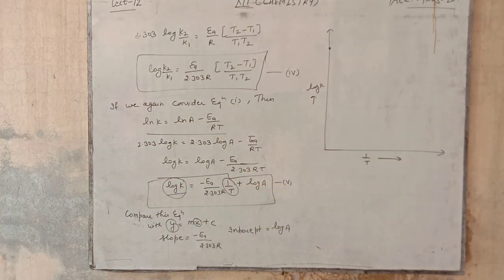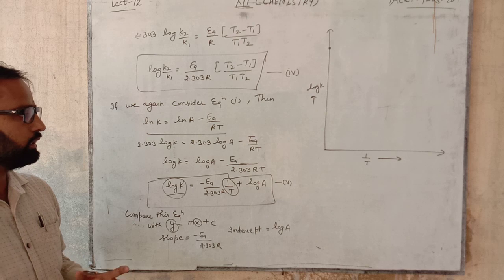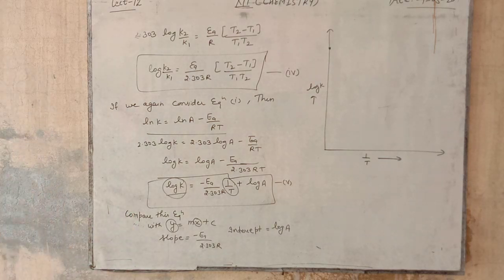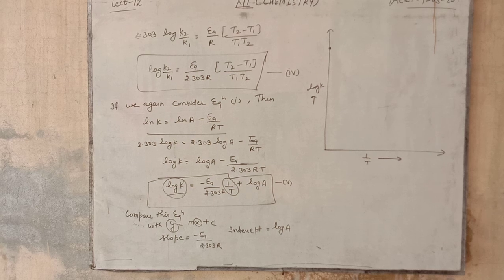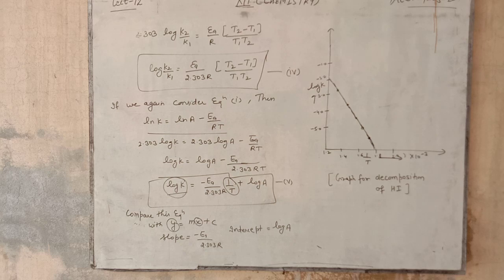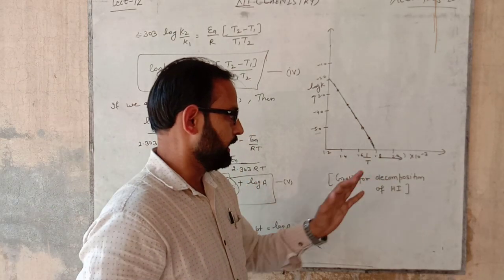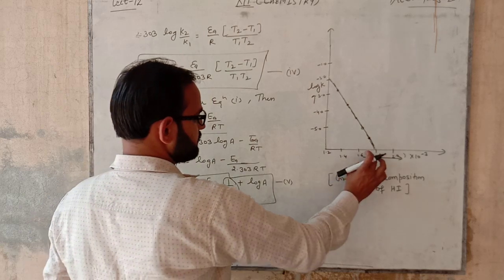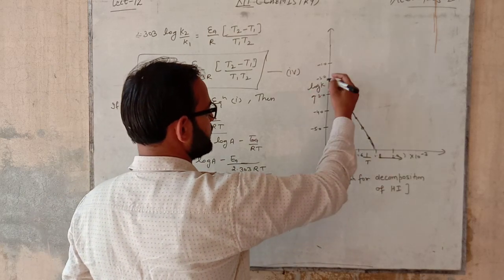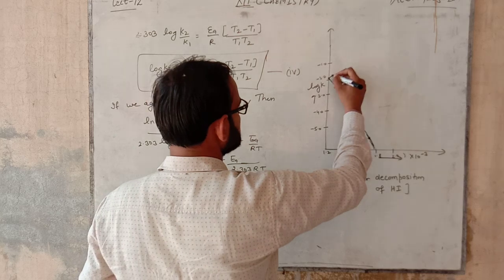We will plot graph for the decomposition of HI. So dear students, this is the graph for decomposition of HI, graph between 1 by T and log k. And this value is log A, equal to the intercept.